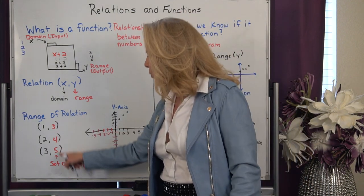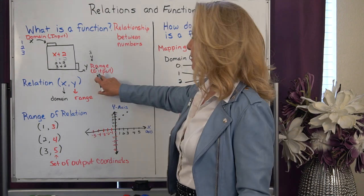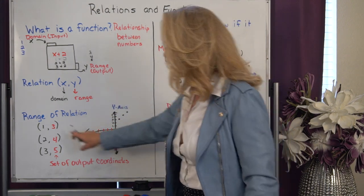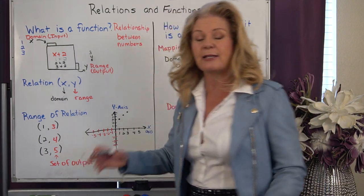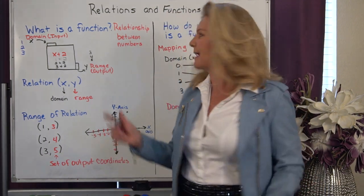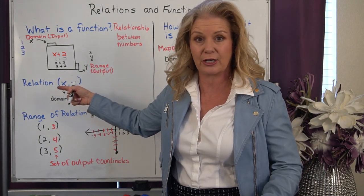Now when we only take a look at what pops out of that machine, otherwise known as the range or the y value, we call that the range of the relation. And a lot of times we're taking a look at that because that's the result of what happened when it went into the function machine.